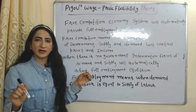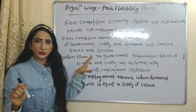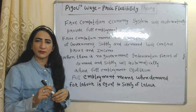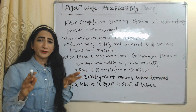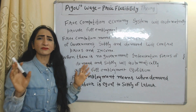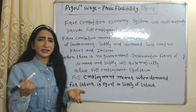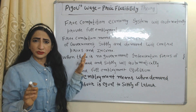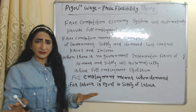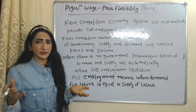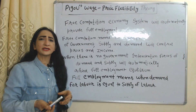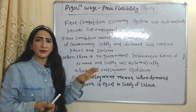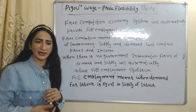Free market means when there is no intervention of government — demand and supply control prices and income. According to this theory, when there is no intervention of government, forces of demand and supply automatically achieve full employment equilibrium. Full employment equilibrium means where labor demand is equal to labor supply.